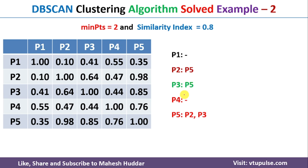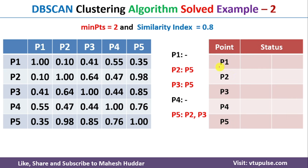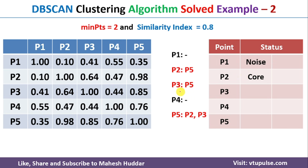Once we have the similar points identified, we need to determine which points are core, border, and noise. For P1, there is only one point in its group — P1 itself — but the minimum required is two, so P1 is classified as noise. For P2, we have two points: P2 and P5, which meets the minimum, so P2 is a core point. For P3, we also have two points: P3 and P5, so P3 is a core point. For P4, there is only one point, which is less than two, so P4 is noise. For P5, there are three points — P2, P3, and P5 — which is greater than two, so P5 is a core point.